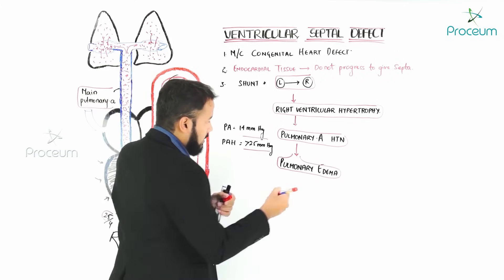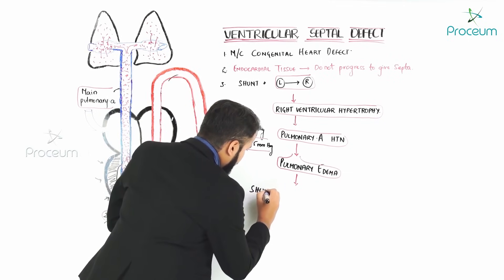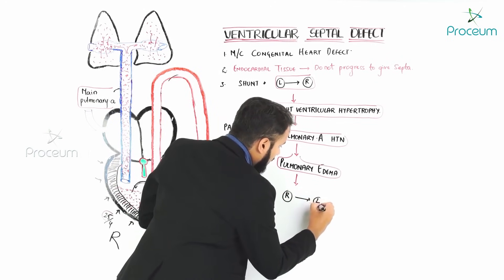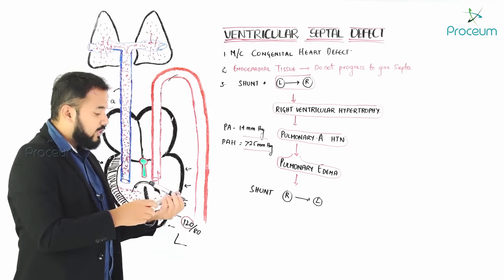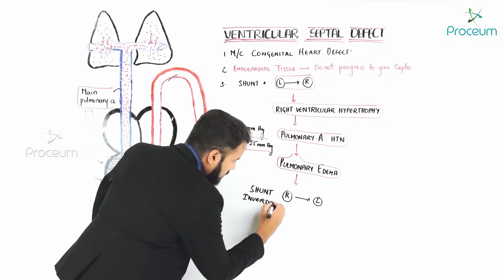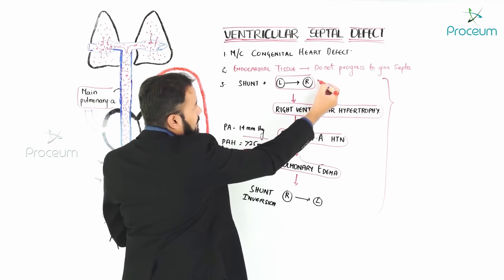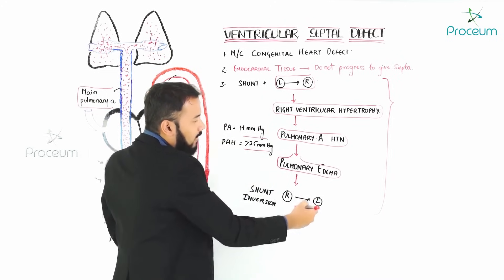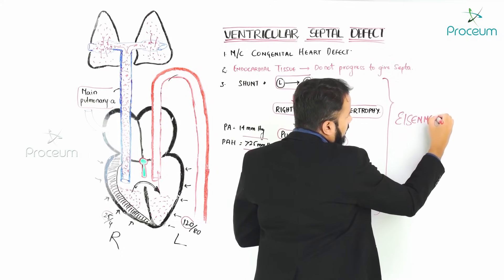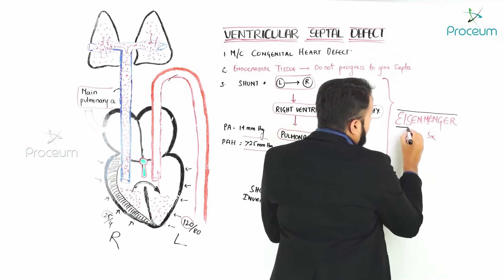This shunt inversion — from left-to-right initially changing to right-to-left over time — along with all the preceding changes including right ventricular hypertrophy, pulmonary artery hypertension, and pulmonary edema, is collectively called Eisenmenger syndrome.